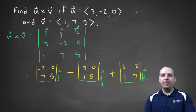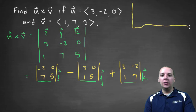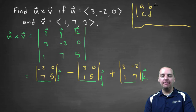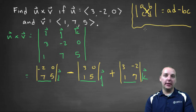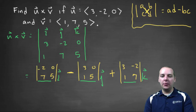Most of you should remember how to do a 2 by 2 determinant. If you have a 2 by 2 determinant with entries a, b, c, d, that determinant is ad minus bc. You take this diagonal product minus the other diagonal product, and that's all. So let's do that quickly.